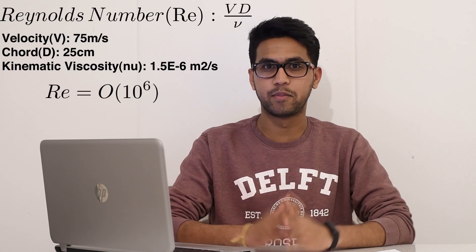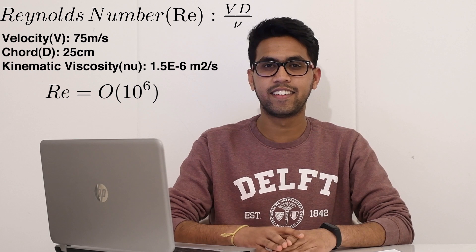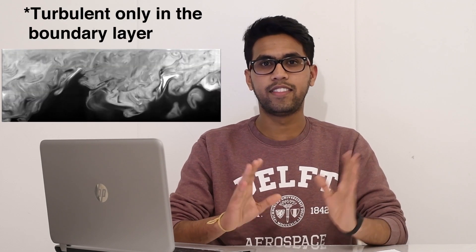Before we start off with any CFD simulation, the first thing we need to consider is Reynolds number. The Reynolds number in this case was characterized to be around 1 million. So what does this Reynolds number value mean? It means that the flow is currently turbulent in the whole domain.